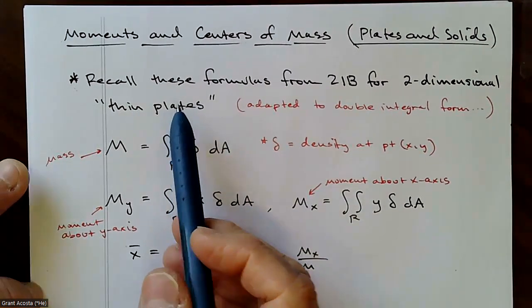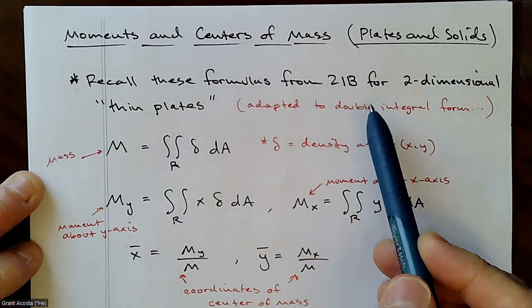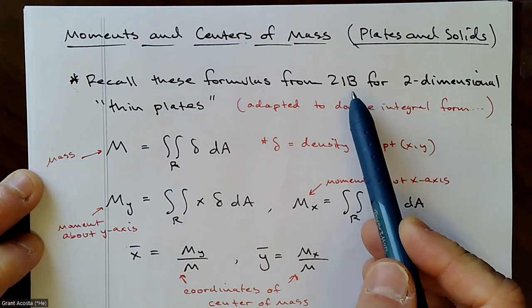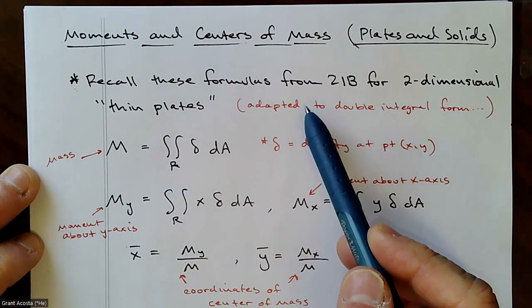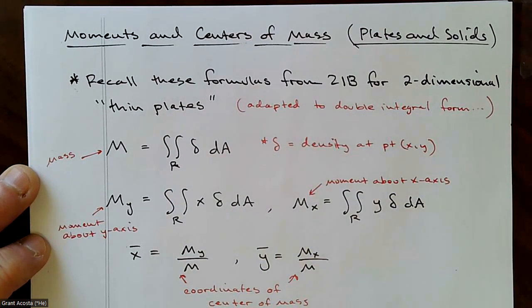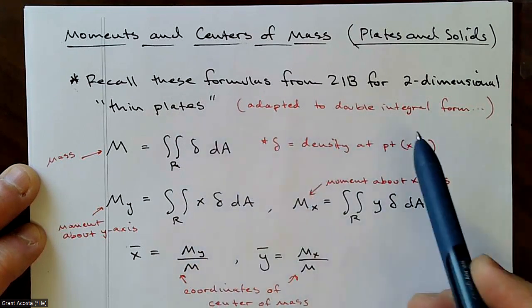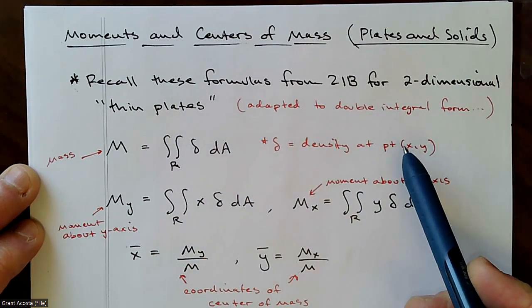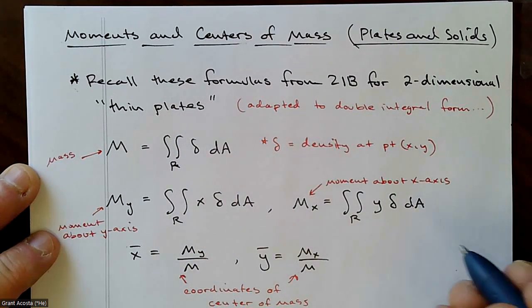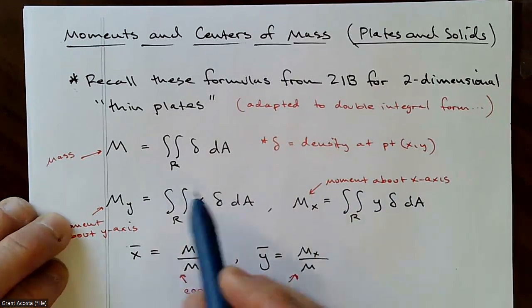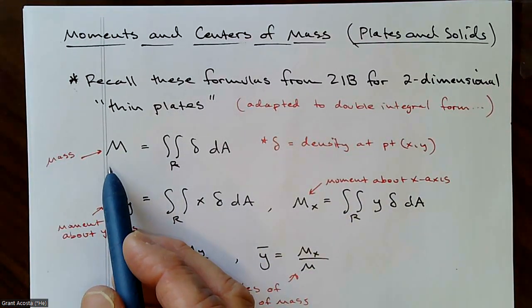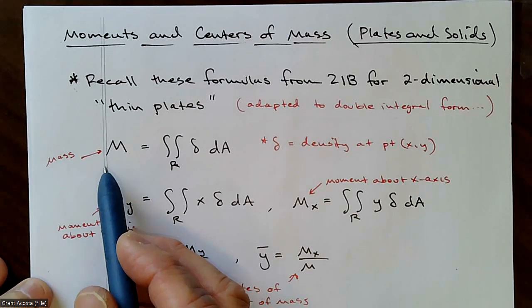All right. But so the idea, assuming you've got some knowledge of that, there were some formulas that we're going to adapt now. In 21B, we were talking about two-dimensional thin plates. So they had no thickness to them, which of course in the real world makes no sense.